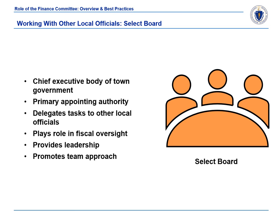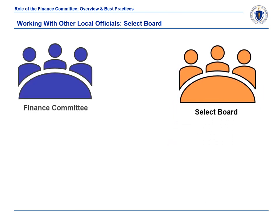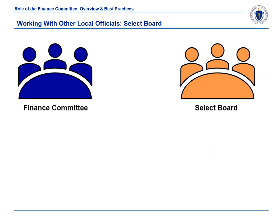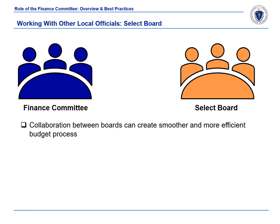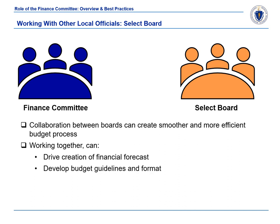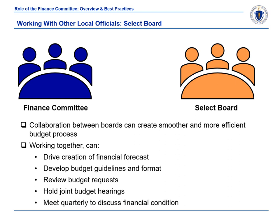The select board should promote a team approach for addressing the fiscal issues of the community. DLS encourages a team approach to local financial management amongst elected and appointed boards, and there are many opportunities for collaboration between the select board and the finance committee, especially as it relates to the budget process. By agreeing on processes and procedures ahead of time, the select board and finance committee can help create a smoother and more efficient budget process. Depending on the town's management structure and local bylaw, the select board and finance committee can drive the establishment of a financial forecast, develop budget guidelines and format for department heads, review budget requests, hold joint budget hearings, and meet quarterly to discuss the community's financial condition.